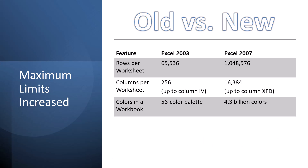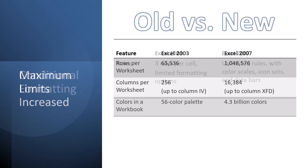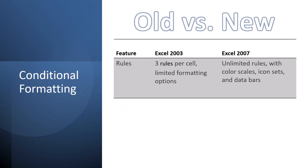New Excel has access to 4.3 billion colors. When it comes to conditional formatting, the older versions of Excel only supported three rules per cell with limited formatting options. From 2007 forward, you can have an unlimited number of rules per cell, plus the inclusion of color scales, icon sets, and data bars.